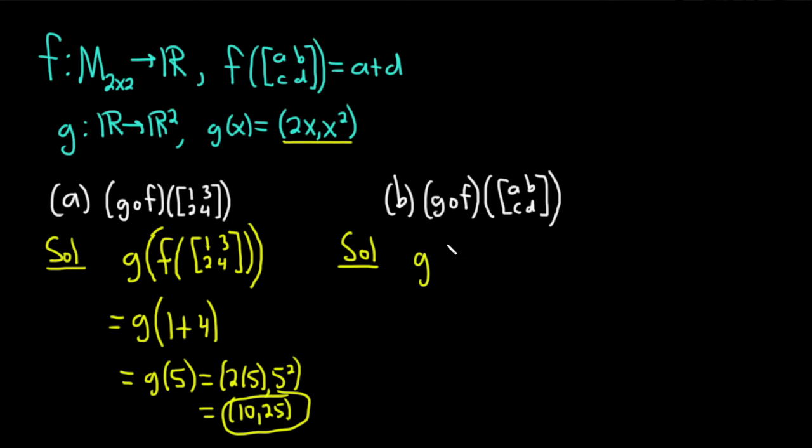This is the same thing as g of f of, and then our matrix a, b, c, d. And parentheses, and then parentheses here for the g. And this is equal to g of. And again, f just basically adds the diagonal elements, so this will be a plus d.